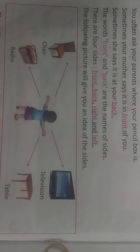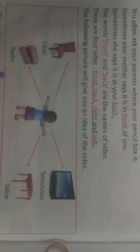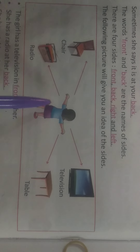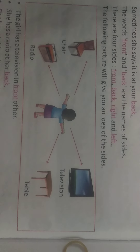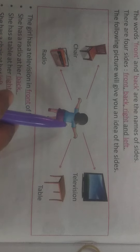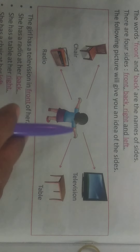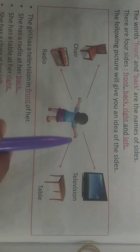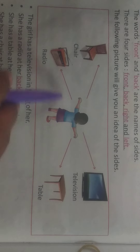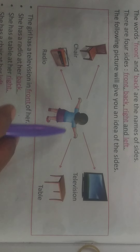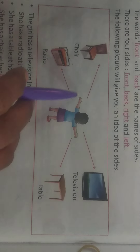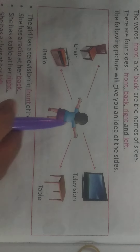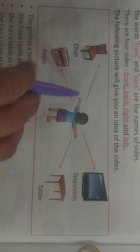Look at this picture. This picture will give you an idea of the sides. Look at this girl — she is standing and has stretched her hands. This is a television, this is a table, this is a radio, and this is a chair. The girl has a television in front of her — uske saamne television hai. She has a radio at her back — uske piche radio hai. She has a table at her right side, and she has a chair at her left. This is front, this is back, this is right side, this is left side.